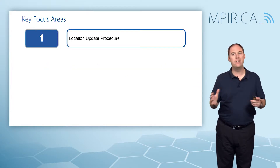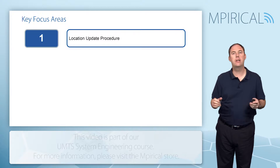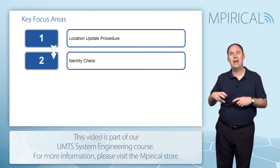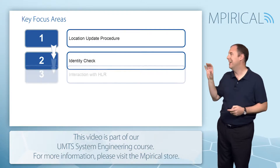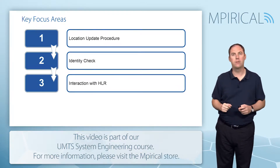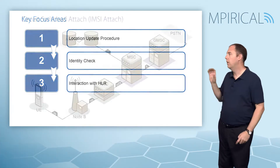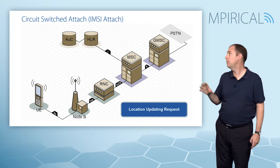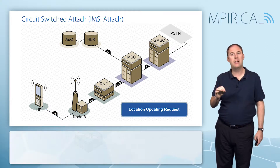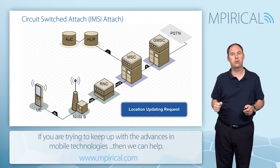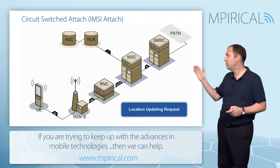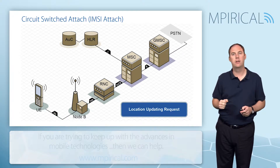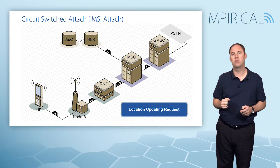We're going to start by looking at the end-to-end signaling scenario — it's called the location update procedure. In doing so, we'll also identify how the identity check procedure works, as well as interaction with the HLR. The mobile is going to send a message up to the MSC, having already established a connection to the radio network controller. The message is a location update request from the handset up to the MSC — this is a NAS message, a non-access stratum message.